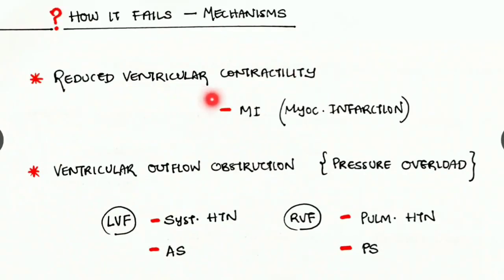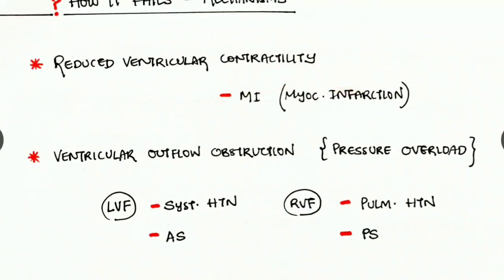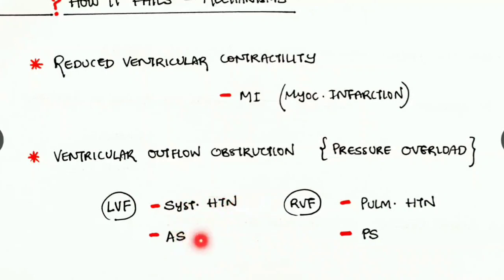Next, we look at the mechanism of heart failure. Heart failure can be due to reduced ventricular contractility, as seen in myocardial infarction. It can also be due to ventricular outflow obstruction — systemic hypertension and aortic stenosis cause left ventricular failure.